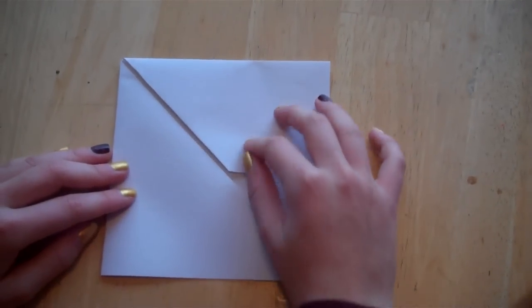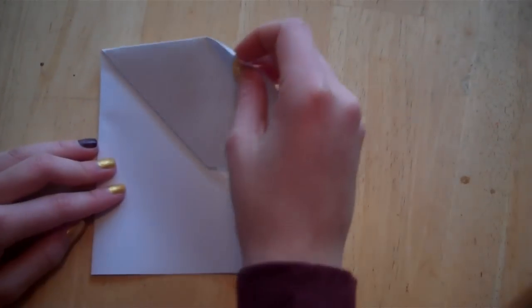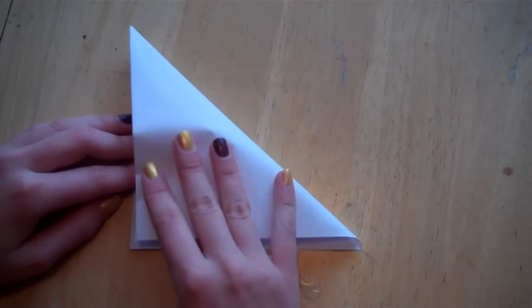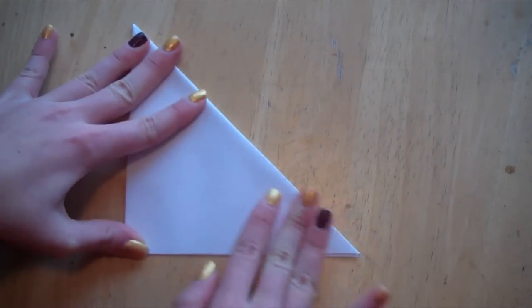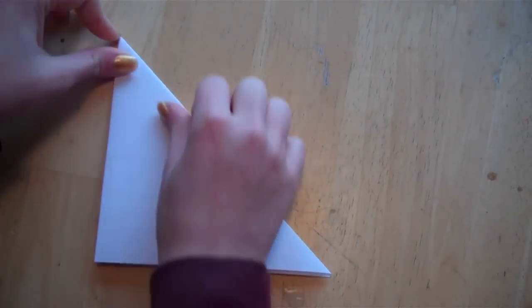Now take the top right corner and bring it down to the lower left corner. Fold it all in half. Give it a really good crease here. It's very important.